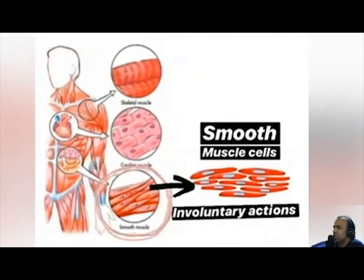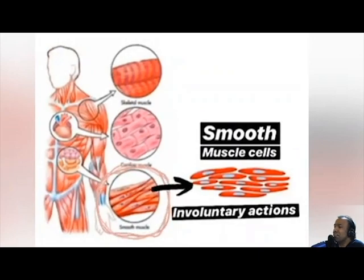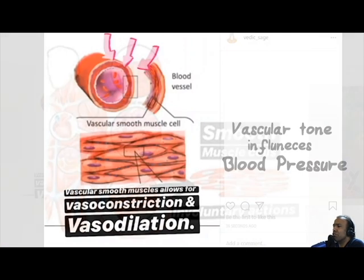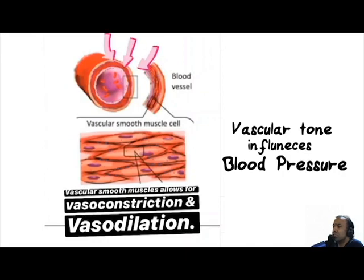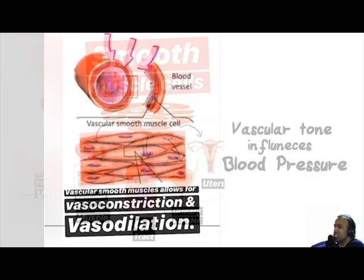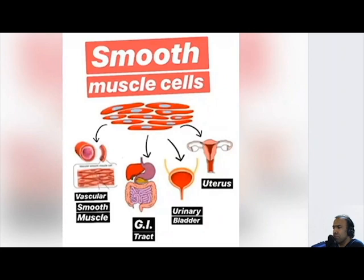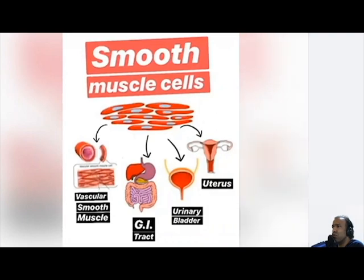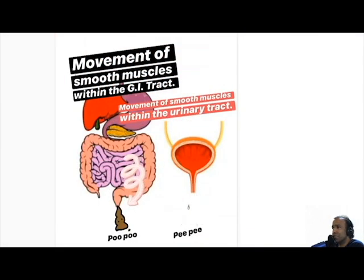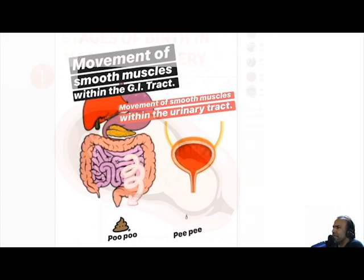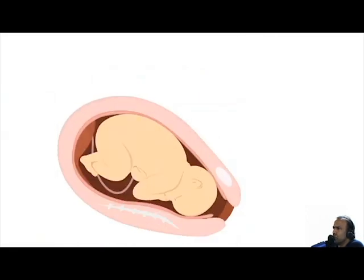Equally important are smooth muscle cells, which are responsible for involuntary contractions and are found within the walls of blood vessels and hollow organs such as the gastrointestinal tract, the bladder, and the uterus. These smooth muscle cells allow for movement within these channels — for example, movement within the gastrointestinal tract, movement of urine within the urinary tract, and even the movement of the fetus through the birth canal.